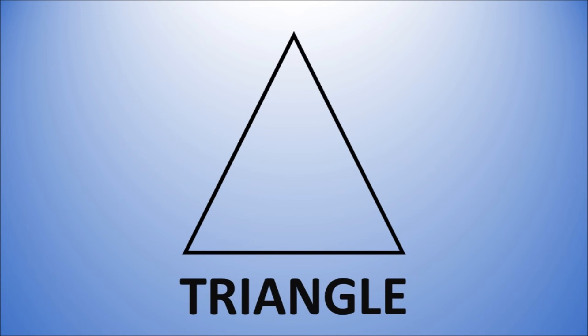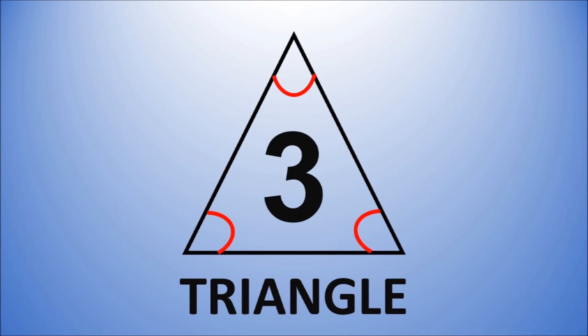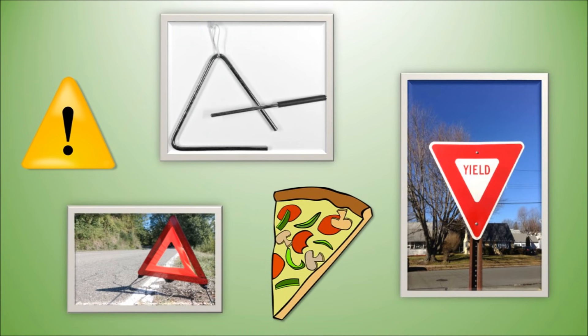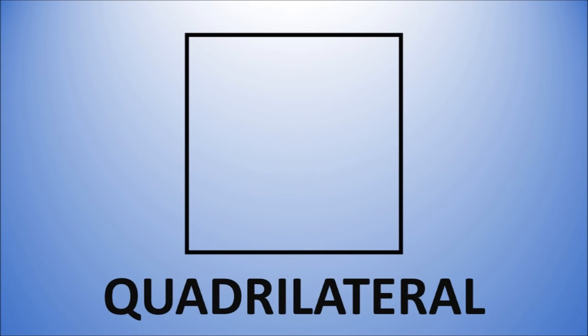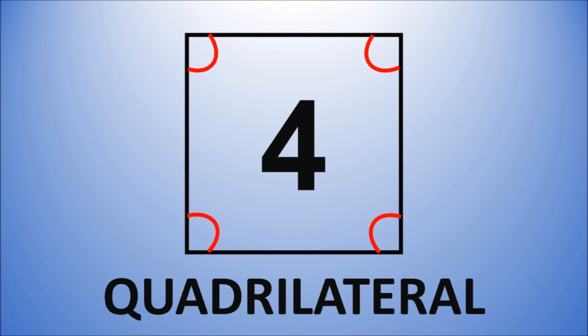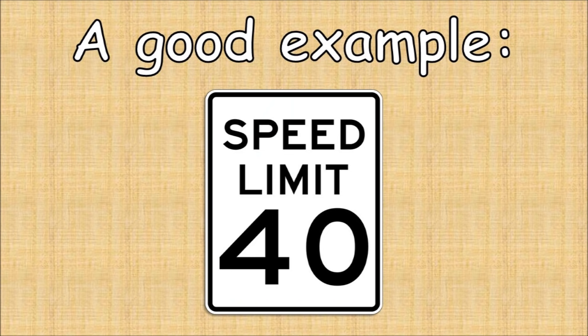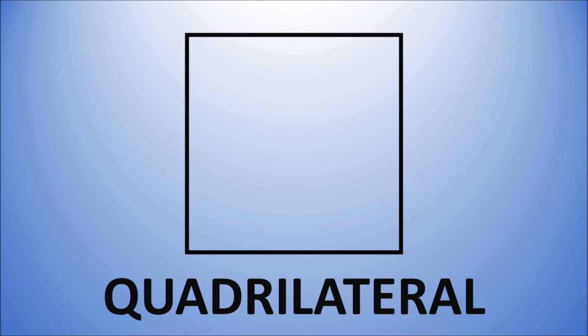A triangle has 3 sides and 3 angles made from straight lines. You see triangles all the time. A quadrilateral has four sides and four angles made from straight lines. A good example is a speed limit sign.